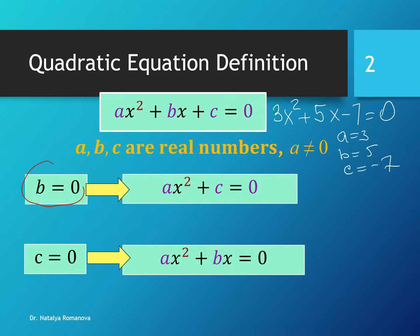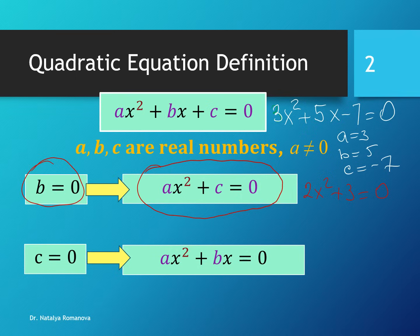If b equals 0, we will have an equation like ax² + c = 0. It is like 2x² + 3 = 0. It is a quadratic equation, but we will use a different approach than the quadratic formula to solve equations like that — for example, 2x² + 3 = 0 or 5x² - 1 = 0.